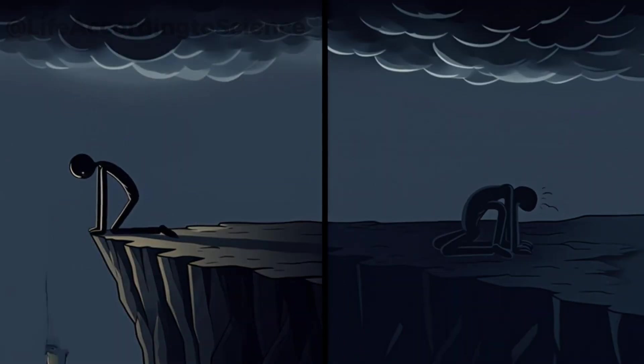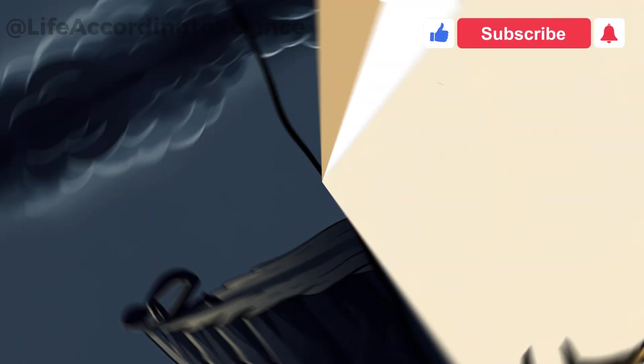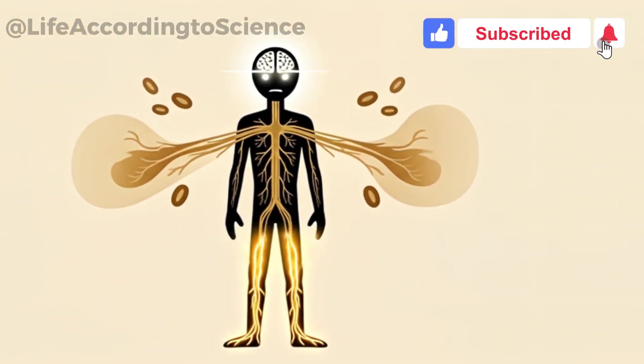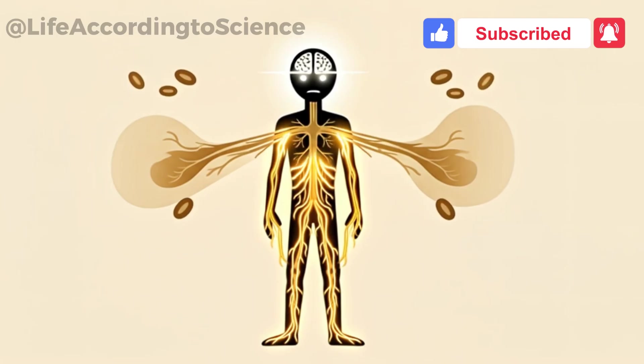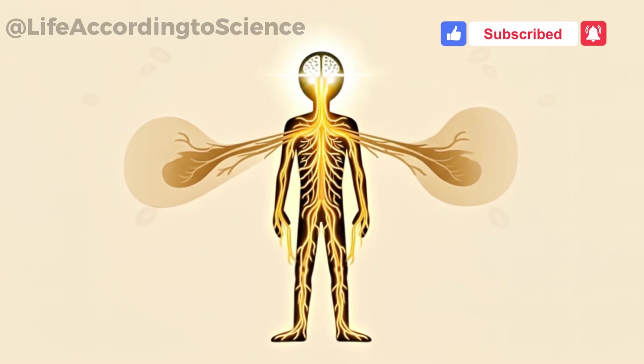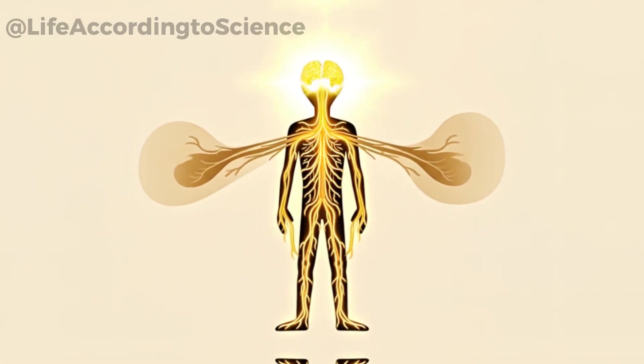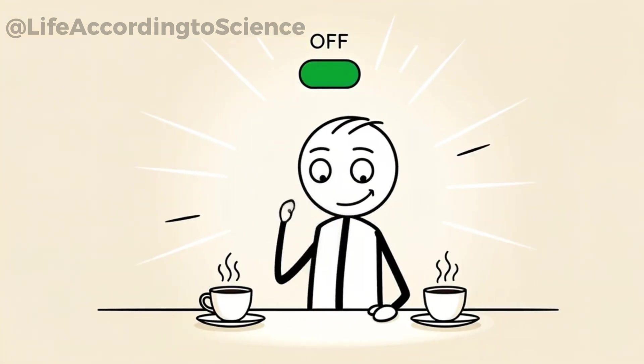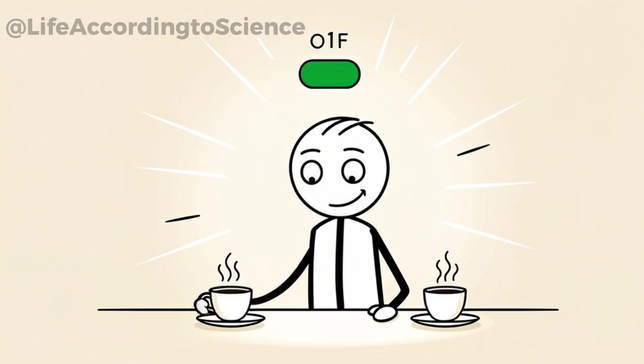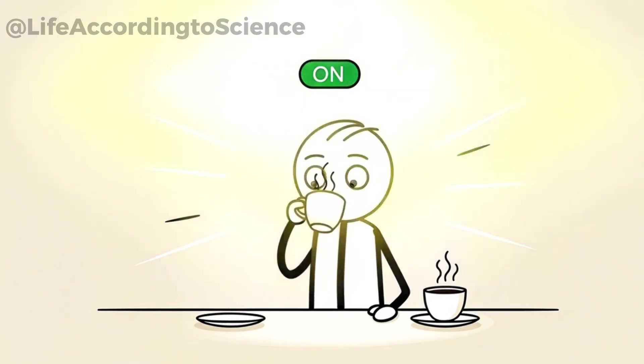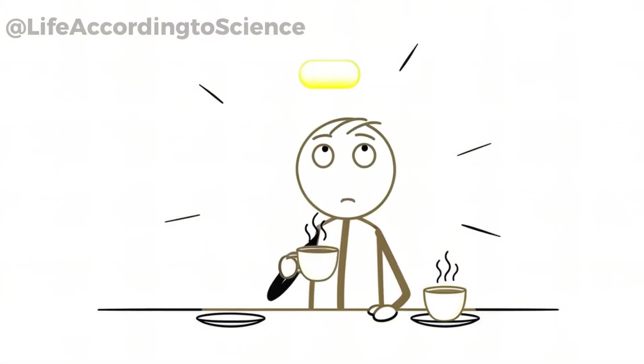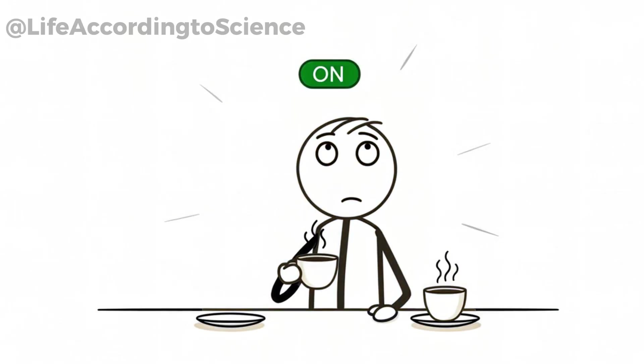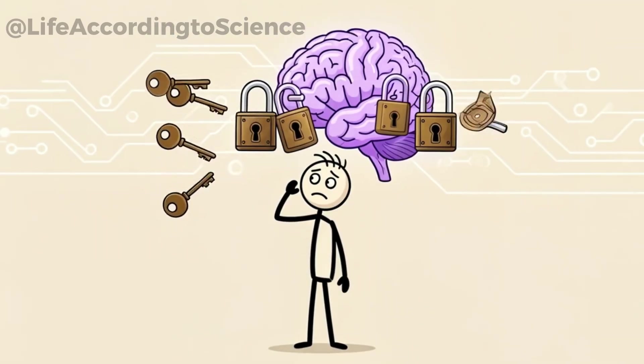The magic of caffeine starts fast. Within 30 minutes, your bloodstream carries it directly to your brain, where it slips past the blood-brain barrier almost effortlessly. That's why your second cup in the morning often feels like flipping a mental switch. Inside the brain, caffeine attaches to adenosine receptors, like a key fitting into the wrong lock.